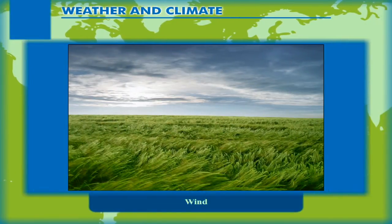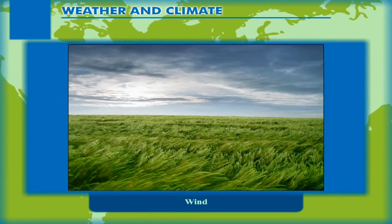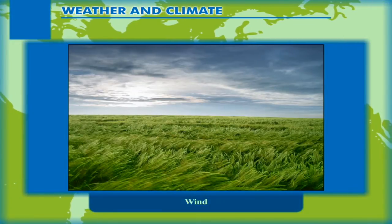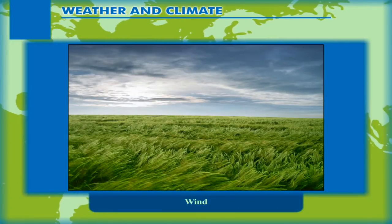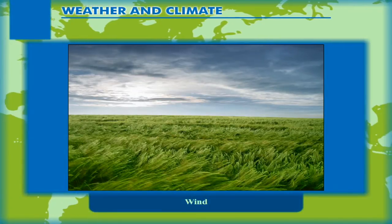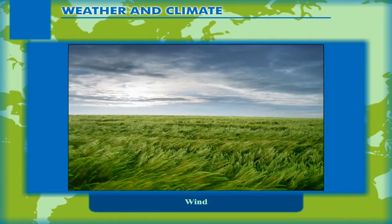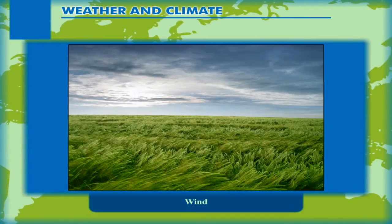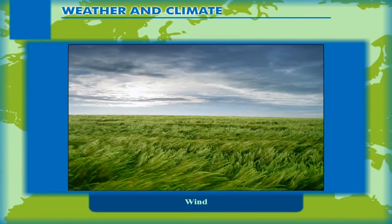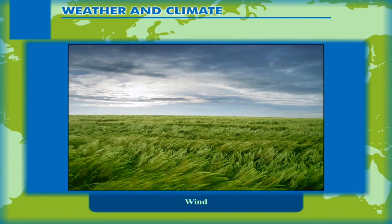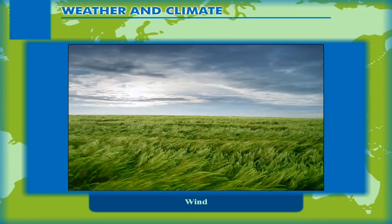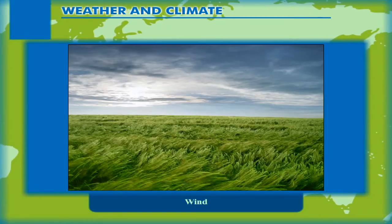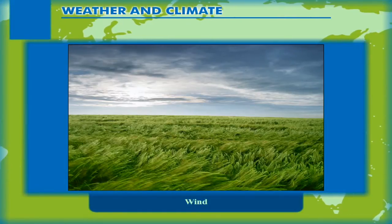Wind. When hot air rises and creates a region of low pressure, cold air from neighboring high pressure areas moves towards low pressure areas. This horizontal movement of air is called wind.